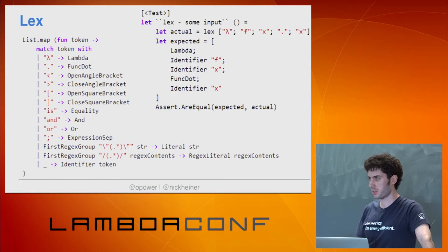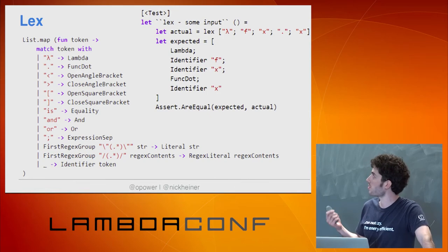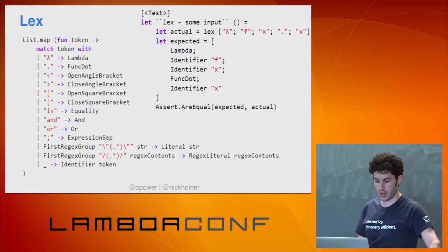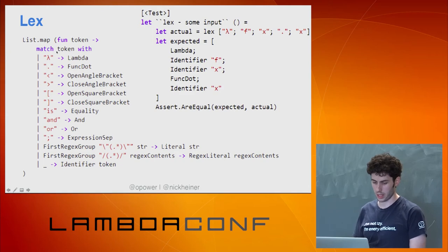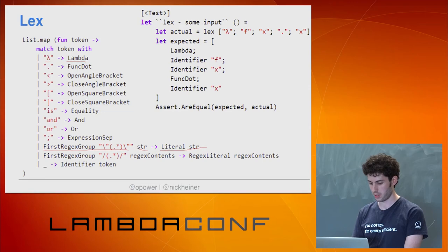This is the core of the lexing function. You can see a test where we take in a list of strings and emit a list of lexical symbols, some parameterized with their inputs. The way we implement it, most of the time it's just a straight pattern match — if you see the lambda keyword, you always emit the lambda symbol. Sometimes we're doing something a little more clever where we're actually doing a regex lookup, getting that value out, and parameterizing the symbol with it.